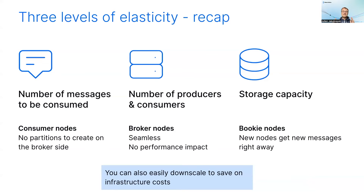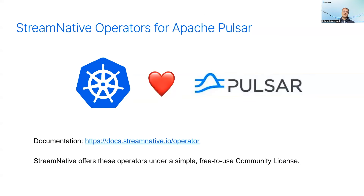Here is a quick recap. You can scale up consumers without heavy operations like adding partitions. To scale up the cluster, you just add a new broker node without the need for data movements across nodes. And if your storage capacity is the limiting factor, adding new bookies resolves the issue — unlike other platforms, these nodes immediately receive new messages. To ease the use of Pulsar in a Kubernetes environment, Stream Native developed Kubernetes operators that facilitate deployment and scaling of Pulsar clusters on Kubernetes, offered under a free and simple community license.